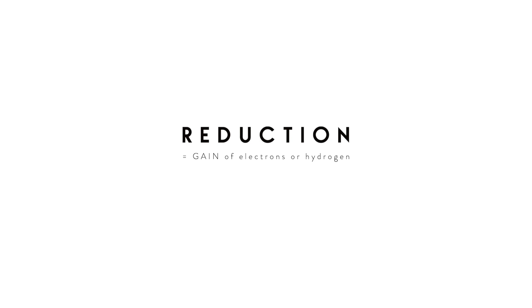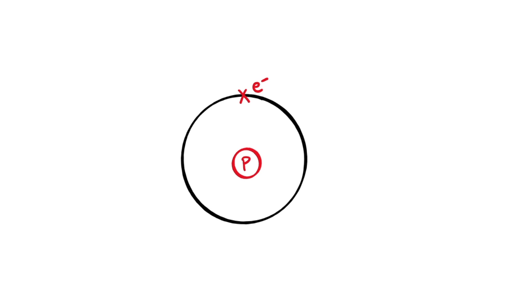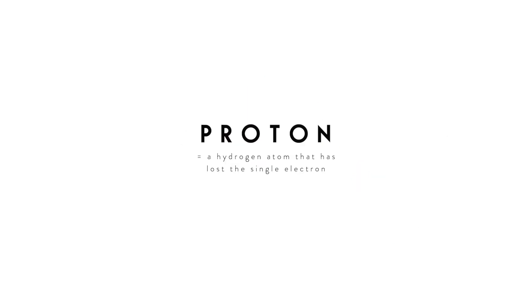Now the reason why we can say electrons or hydrogen is because if we look at a hydrogen atom a hydrogen atom is composed of a nucleus with a central proton surrounded by a single electron. Because an electron is part of a hydrogen atom we can define oxidation and reduction in terms of hydrogen or in terms of electrons and we can also define it in terms of what we call a proton and a proton is just a H+ atom so it is a hydrogen atom that has lost its single electron so it is simply that proton in the middle. So we could say oxidation is loss of electrons a proton or a hydrogen atom in its entirety and then reduction is gain of electrons a proton or hydrogen.